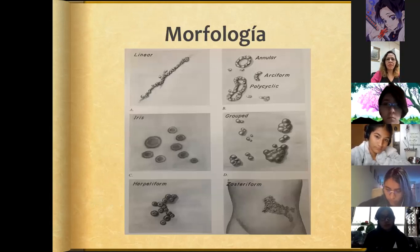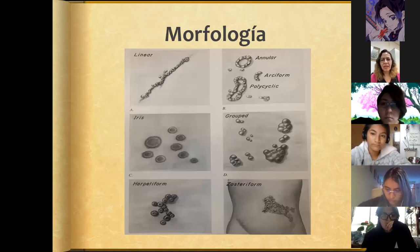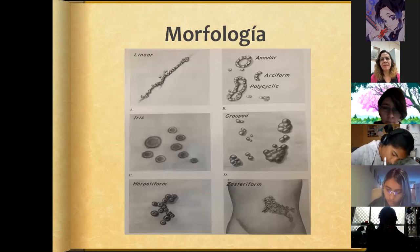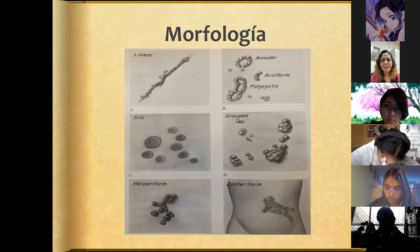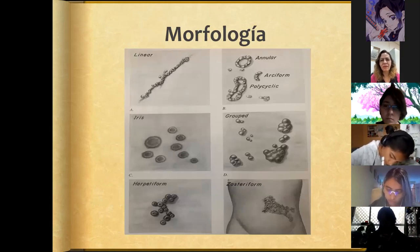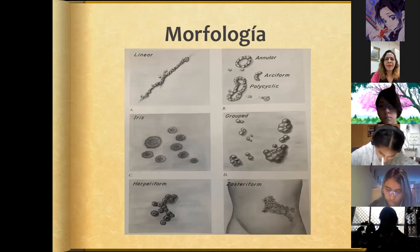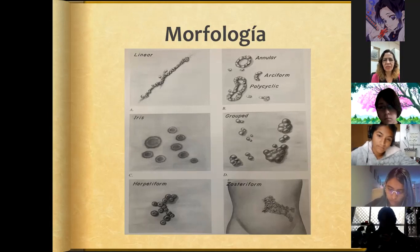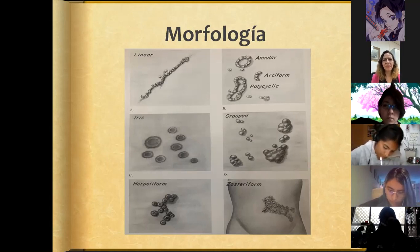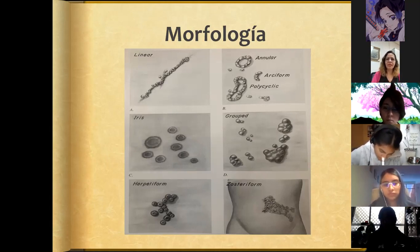We can also emphasize certain morphological characteristics — whether they appear in a linear, annular, arciform pattern (meaning a half circle), polycyclic, iris pattern (meaning it has a more notable, elevated, erythematous, even pigmented border with concentric circles), grouped in clusters, herpetiform, or zosteriform — zosteriform referring to when it follows the path of a dermatome. Another variant is nummular, meaning it resembles a coin — lesions that are round and completely occupied by cutaneous changes.